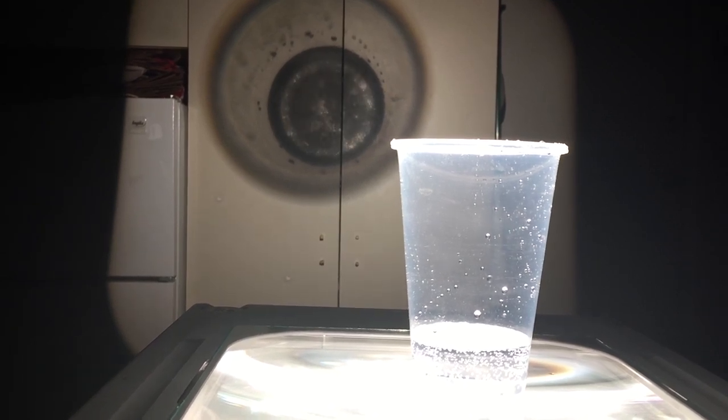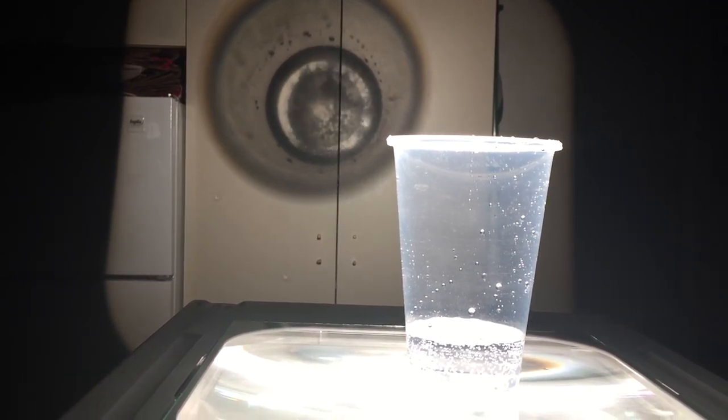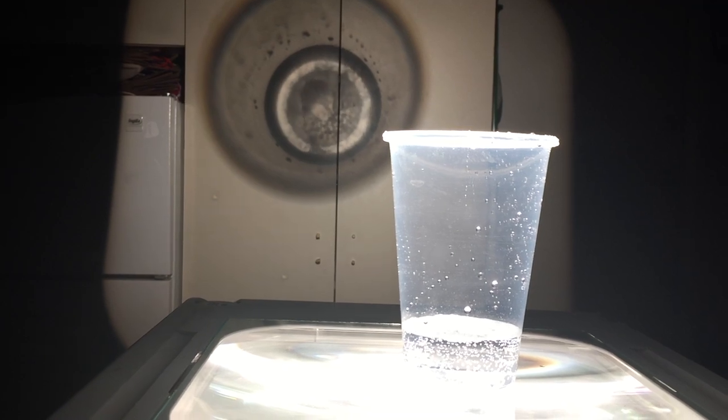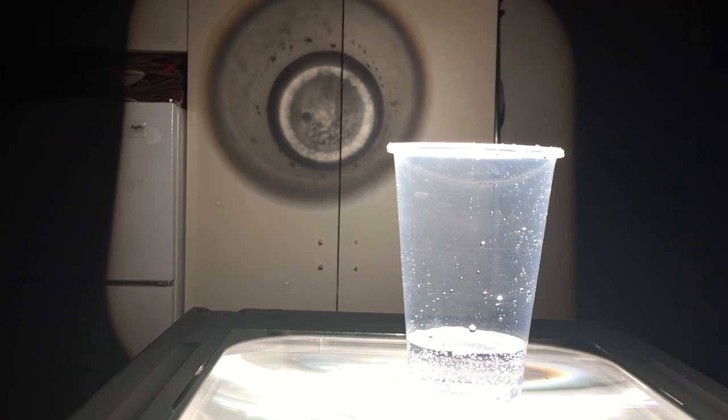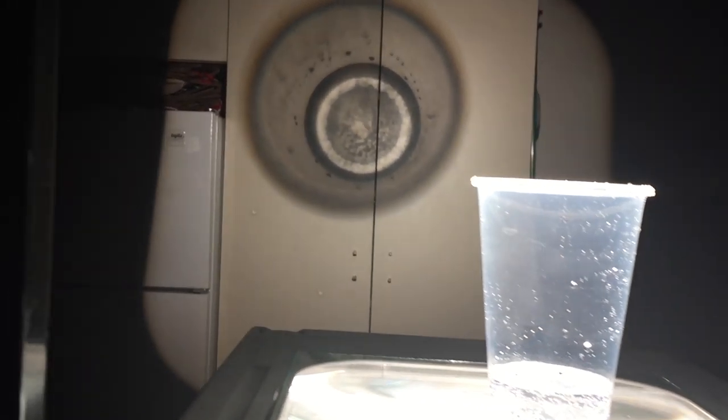A suspension is heterogeneous and has two or more distinct phases. Muddy water is a temporary suspension, where dispersed particles will eventually settle to the bottom. Substances like milk, which we'll see next, are also suspensions, since particles are dispersed rather than dissolved.